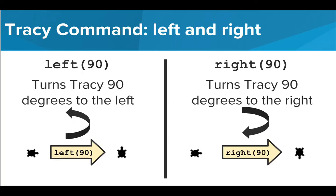We have two commands that are specifically used to turn Tracy. These commands are left and right. When we use these commands, we need to put 90 into the parentheses.